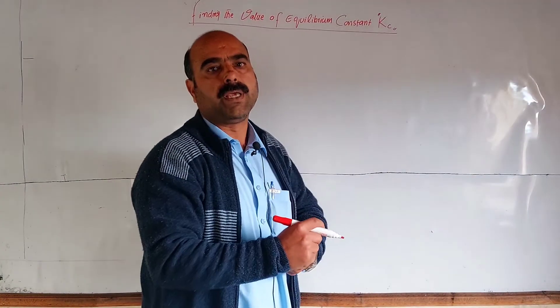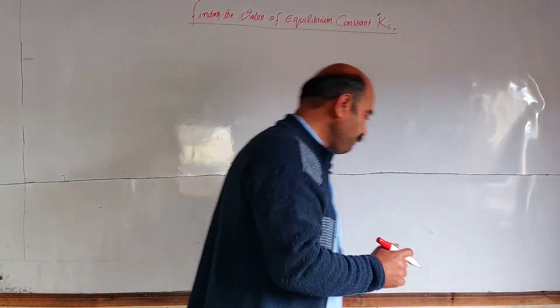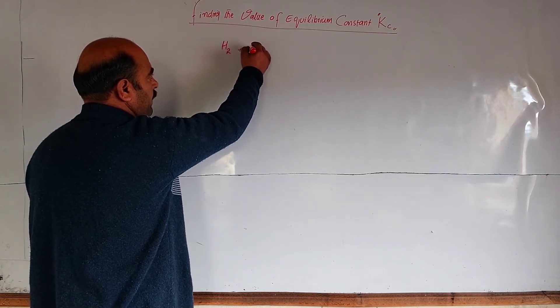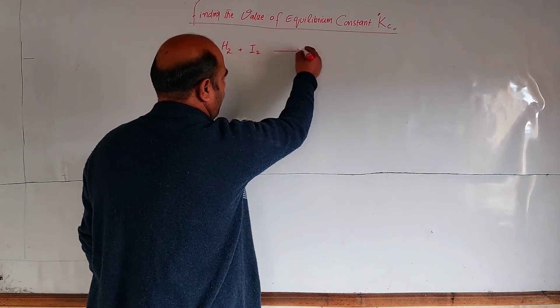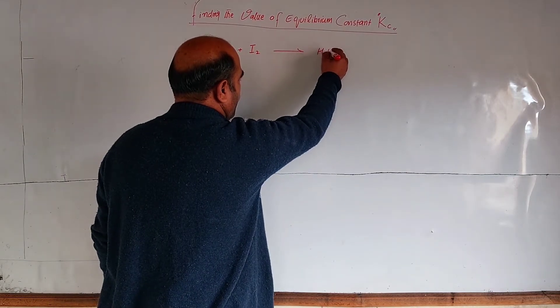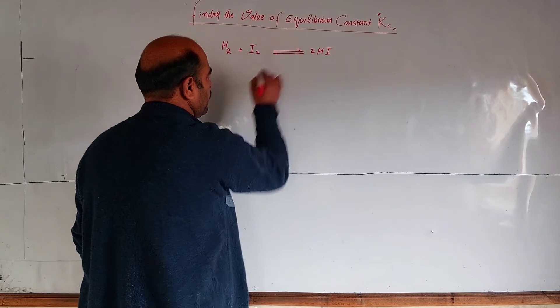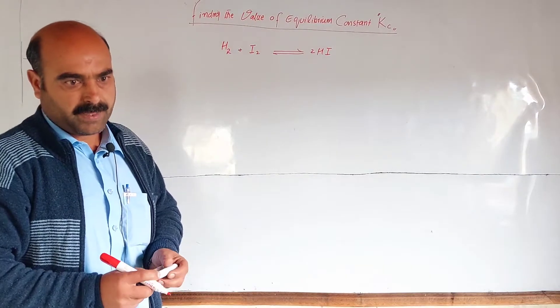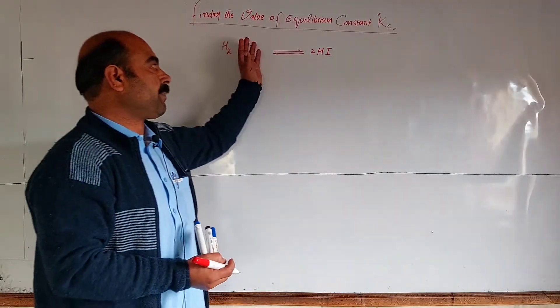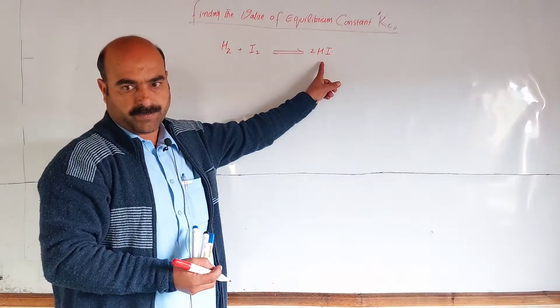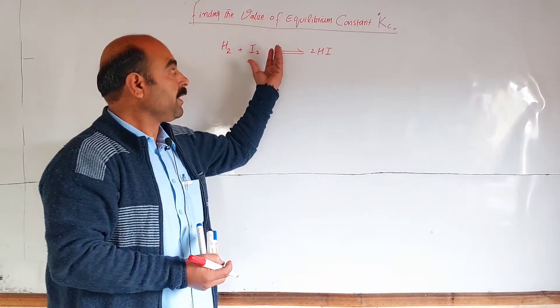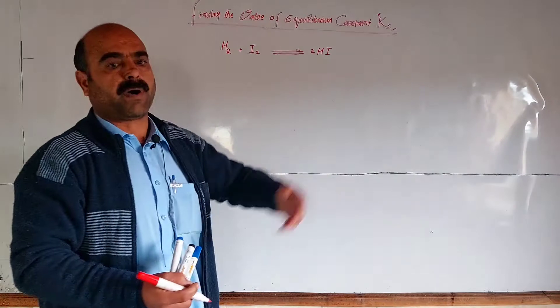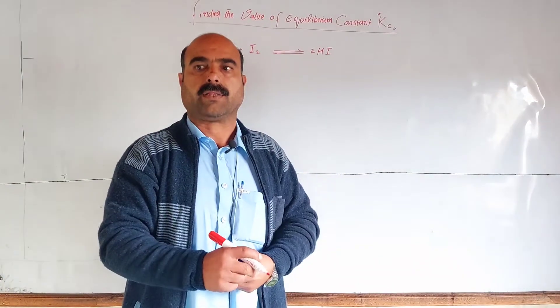Example: hydrogen and iodine combine to give hydrogen iodide. Initially, hydrogen and iodine concentrations decrease with the passage of time as product forms. Then reverse reaction starts, and at the end, rate of forward reaction equals rate of reverse reaction. This state is equilibrium state.